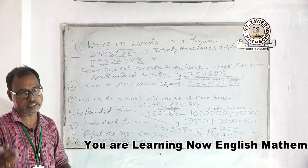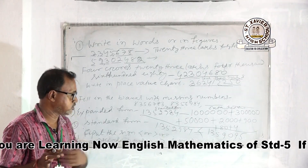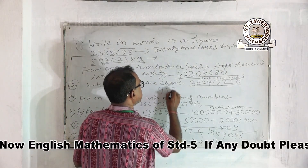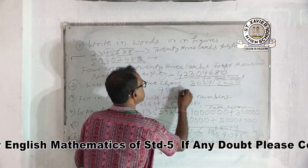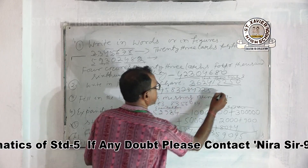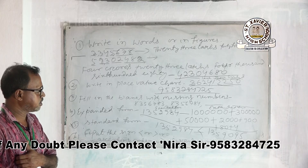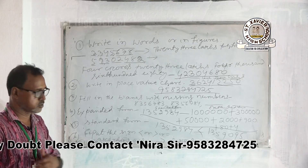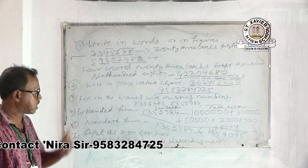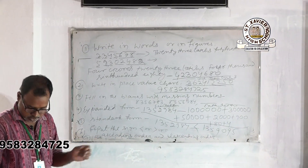That completes Exercise 1, sections 1.2 and 1.3. If you have any doubt, please ask me — my number is 9583284725. I will try my best to remove your doubt by explaining it to you. Thank you.